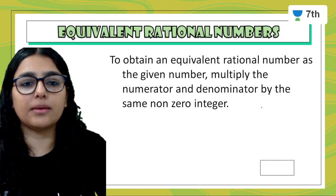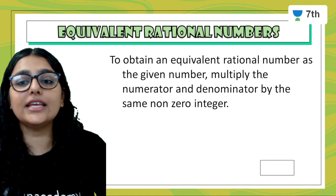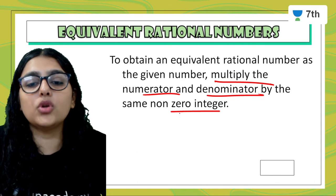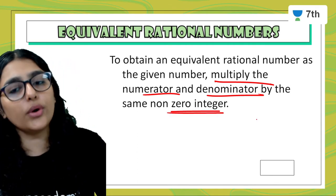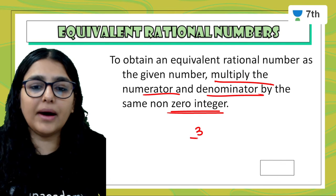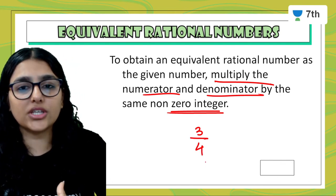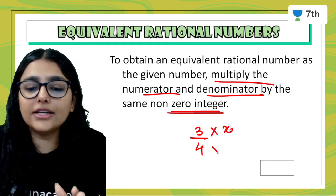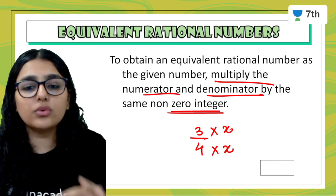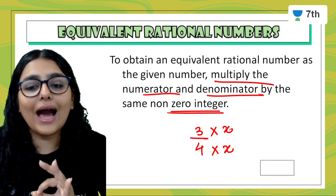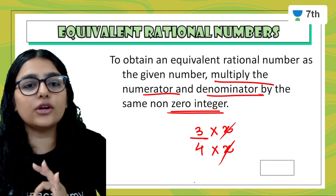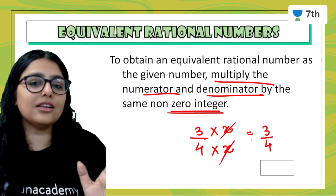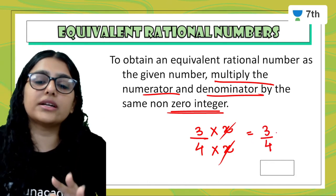Moving forward: equivalent rational numbers. To obtain an equivalent rational number, multiply the numerator and denominator by the same non-zero integer. For example, for 3 by 4: if I multiply both by the same number, when I bring it to lowest form the common factors cancel out and I get my original answer. I will just write it in multiples form.